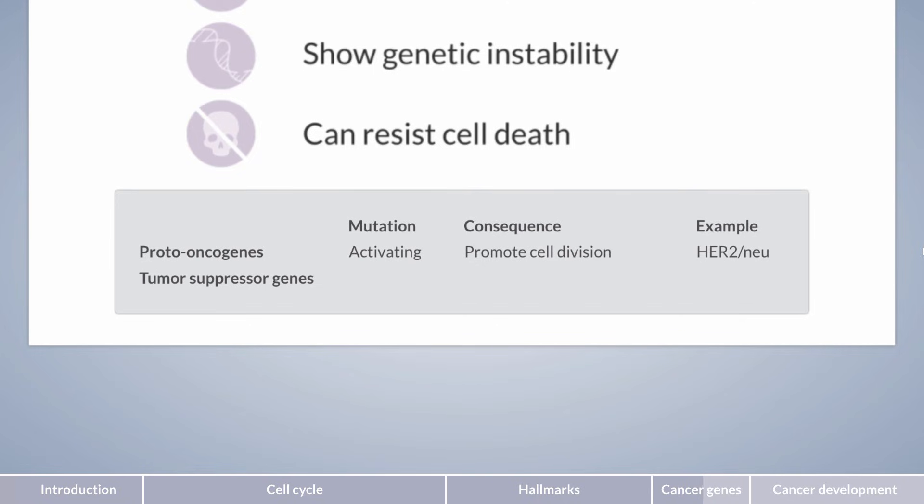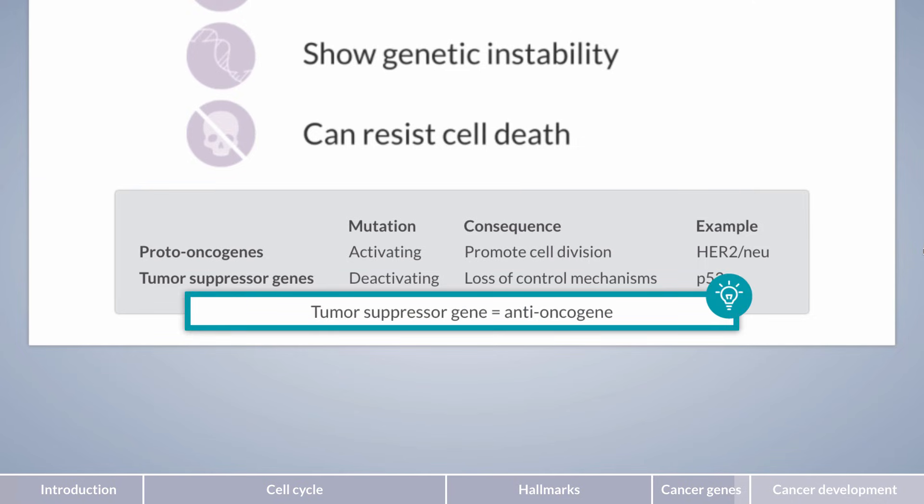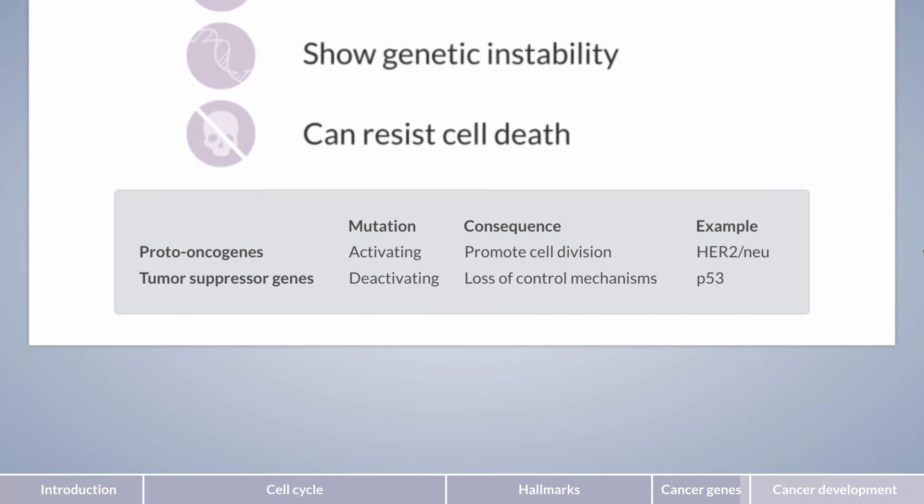In contrast, tumor suppressor genes require deactivation to contribute to tumor formation. The most important tumor suppressor genes control the cell cycle and, when functional, inhibit uncontrolled cell division. One example is p53. It has been nicknamed the guardian of the genome due to its importance. Regarding the terminology, you might want to keep in mind that anti-oncogene is sometimes used synonymously with tumor suppressor gene. Mutations in these genes usually occur over time and will be discussed in the next slide.